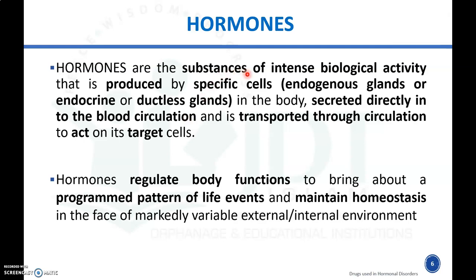Hormones are substances of intense biological activity which are produced by specific cells known as endocrine glands, or ductless glands, and which are secreted directly into the blood circulation and transported through the circulation to act on target cells at different sites of the body. In short, these are intense biological substances produced by endocrine glands, secreted into the blood and transported to act on different target cells in the body.